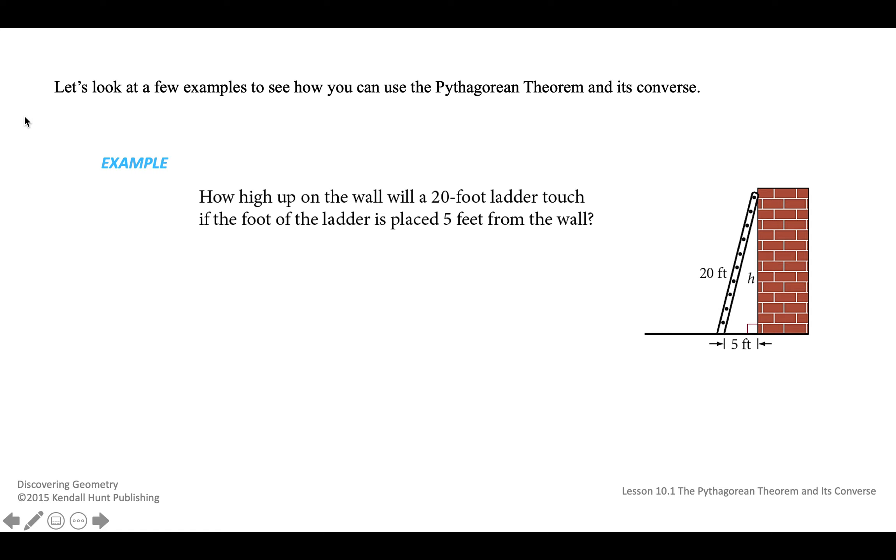So here we have a picture of a ladder against a wall, and it forms a triangle, and it says, how high up on the wall will a 20-foot ladder touch if the foot of the ladder is placed five feet from the wall? So notice, the triangle against the wall makes a right triangle, it's got a right angle here. The hypotenuse, the longest side, the one across from the right angle, is 20 feet, so that's like our C value. One of our legs is five feet, and then the other one we don't know, it's the height.